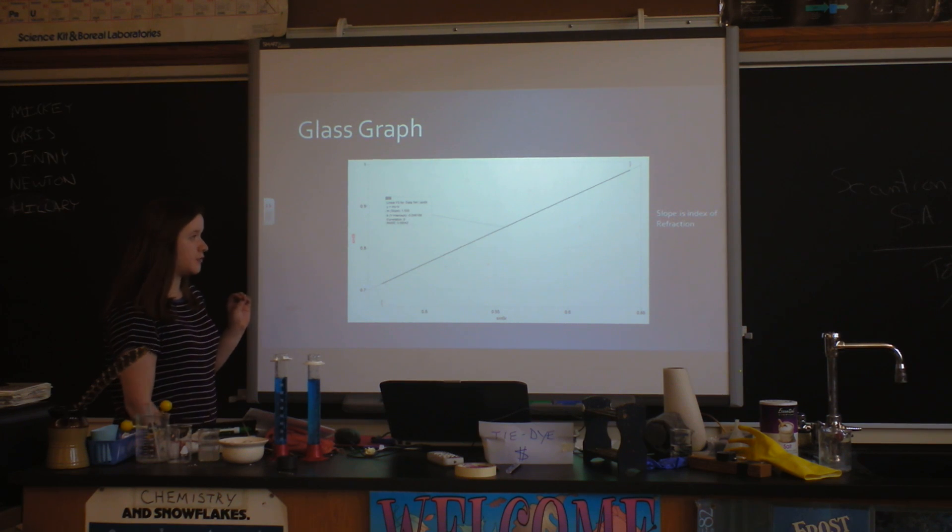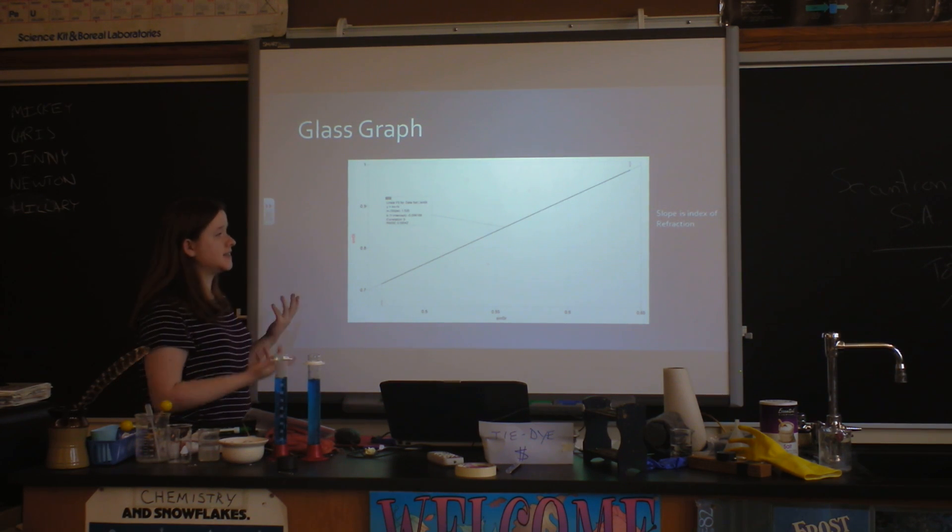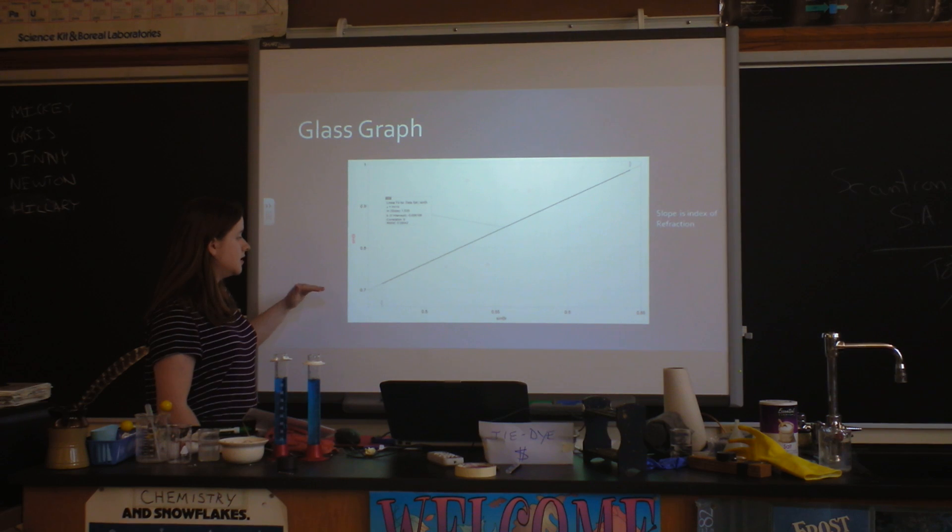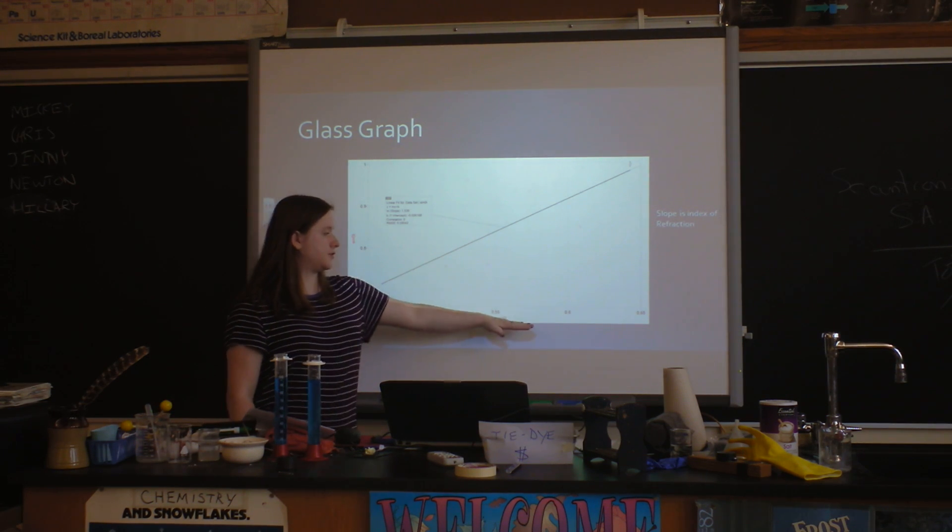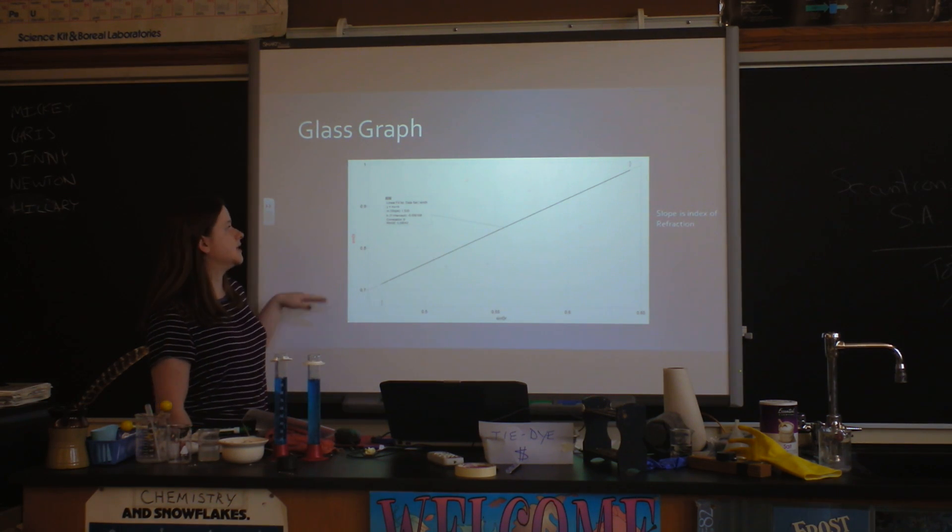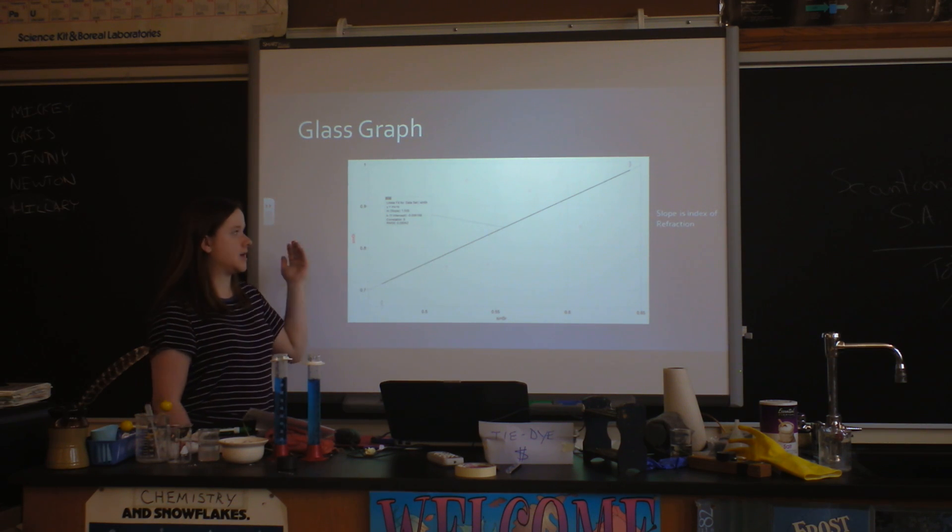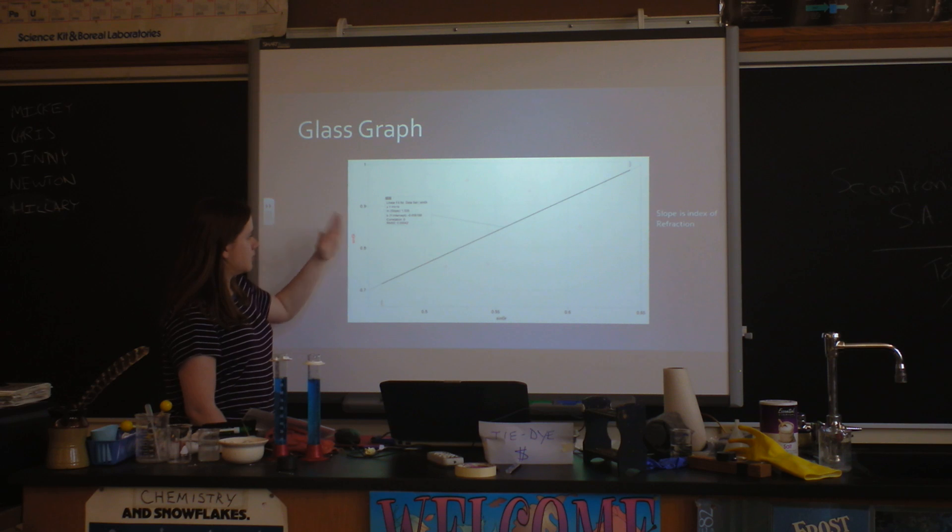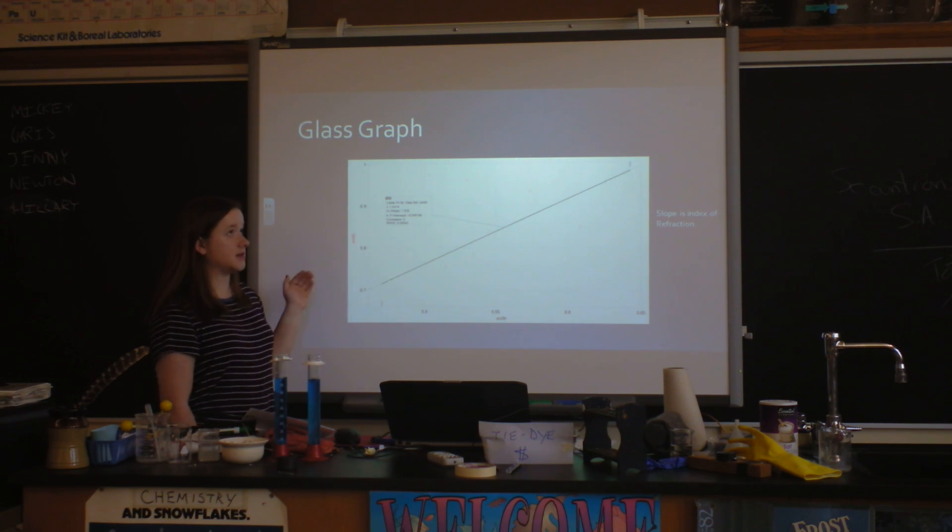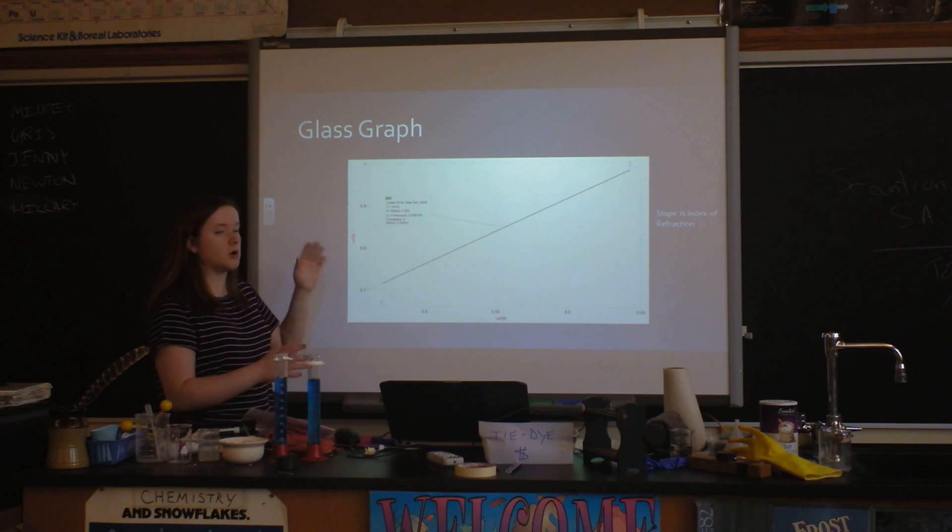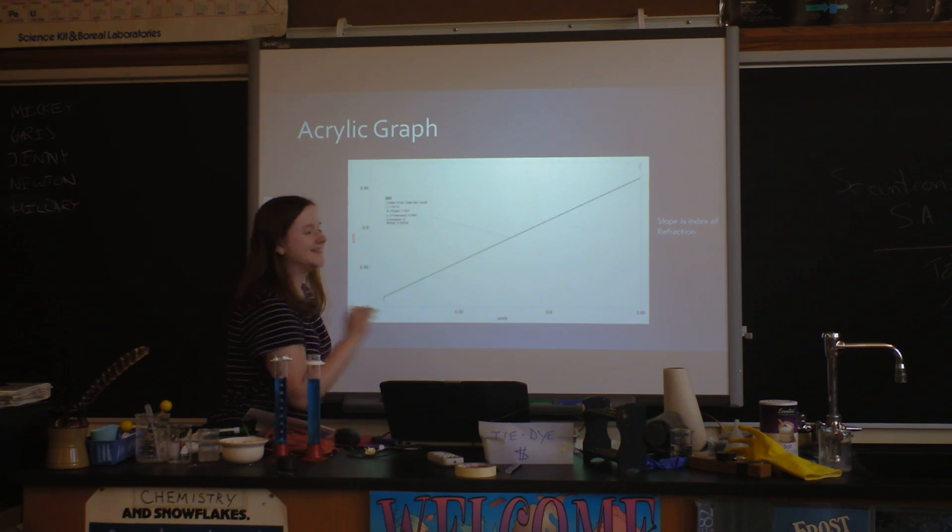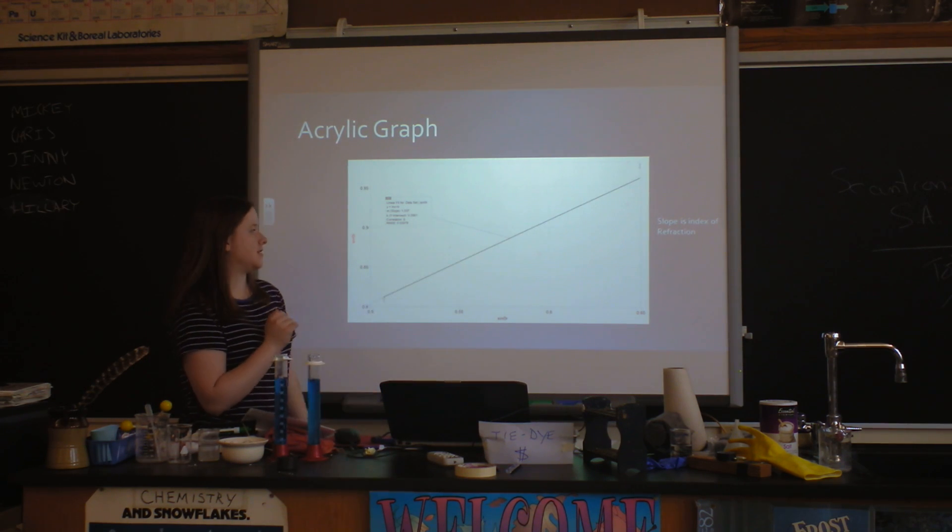So this was the graph for the glass. This is the sine of the angle of refraction and this is the sine of the angle of incidence. The slope is the index of refraction because of the relationship between the two things, and the index of refraction for air is one - I meant one, sorry. And then that's just the same graph for the acrylic.